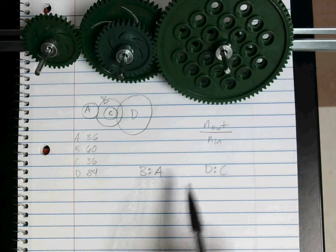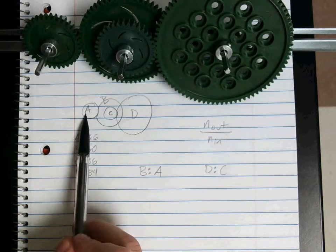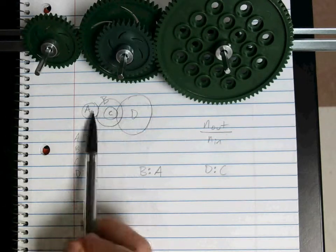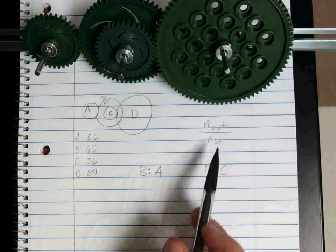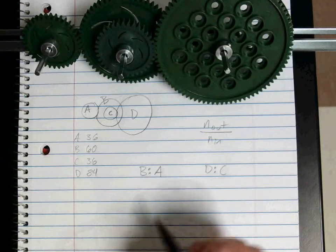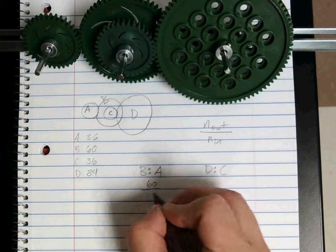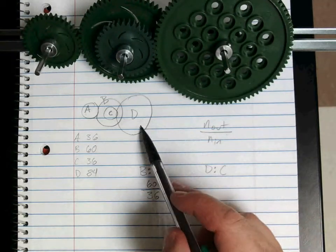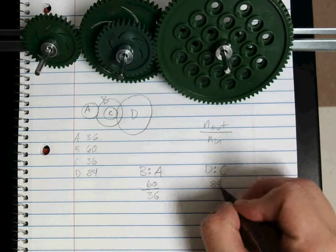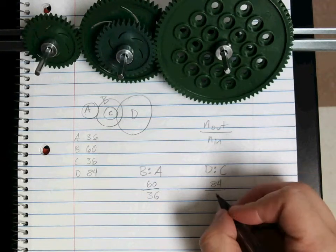So remember, we have N out divided by N in is our formula. So we're going to look for our A as our in. So anything further is going to be our out. So our B is out, which is why it's on top. Our A is in. So we're going to say 60 divided by 36. For our D to C, remember D is going to be out. So we have 84. Our C is in, which was 36.